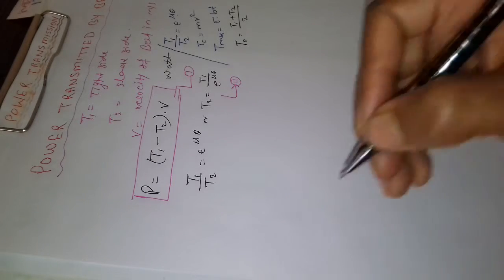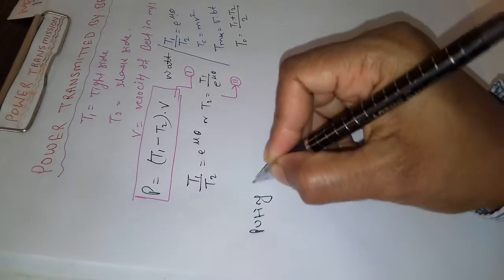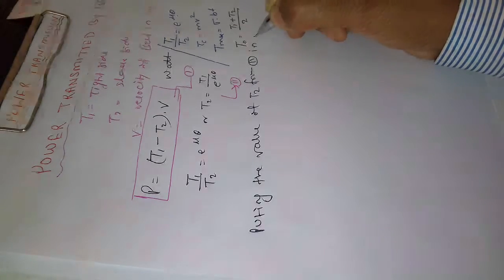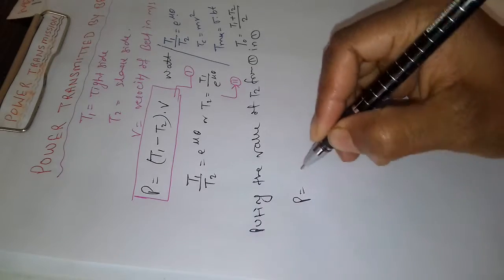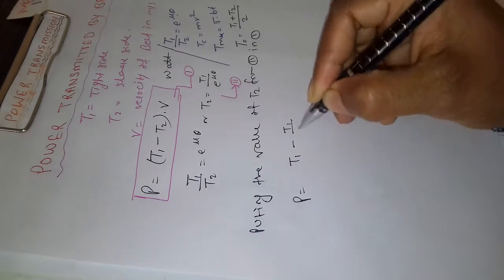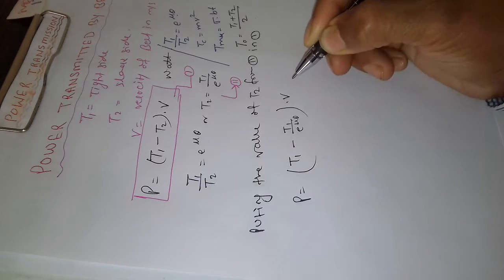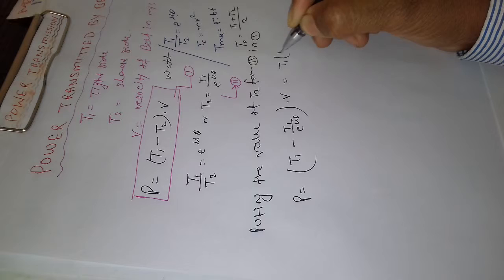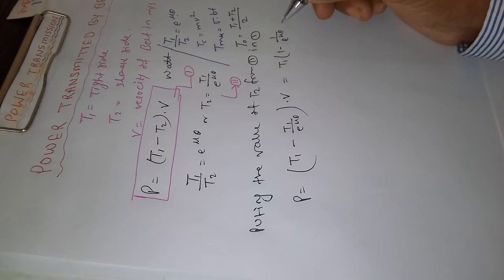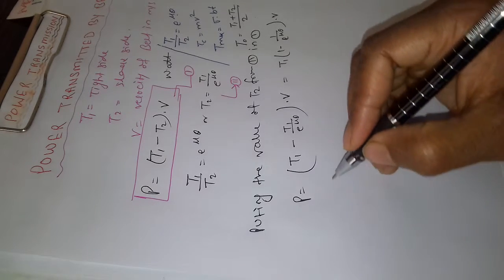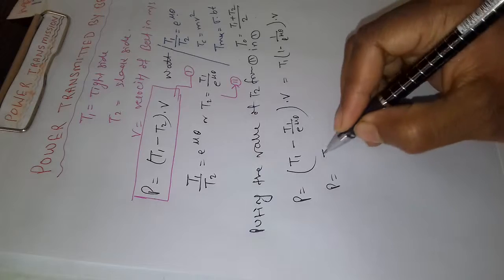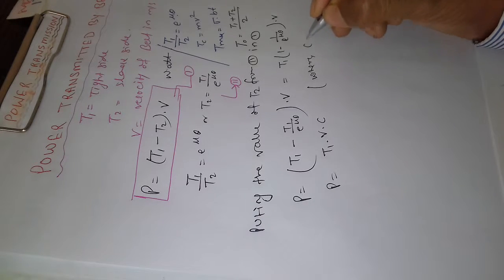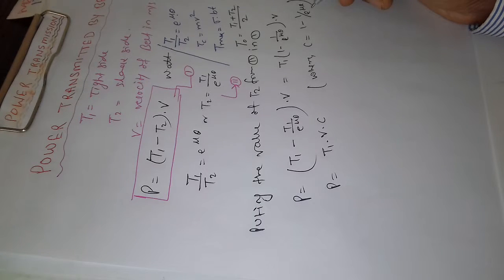Now P equals T1 minus T1 upon e^(μθ), into V. Taking T1 as common: P = T1 × (1 − 1/e^(μθ)) × V. We can also write P = T1 × V × C, where C is a constant equal to 1 minus 1 upon e to the power mu theta.